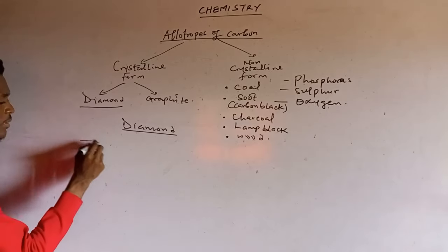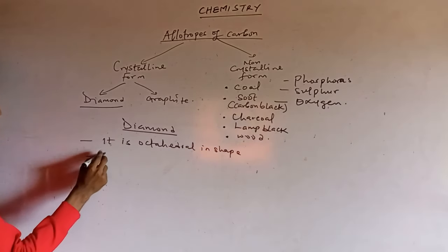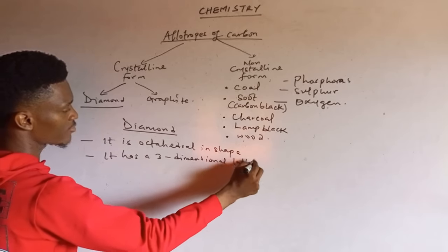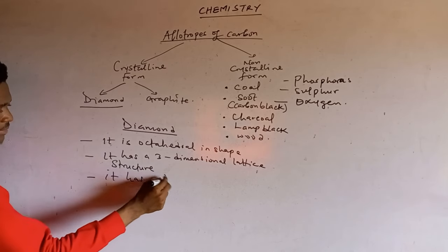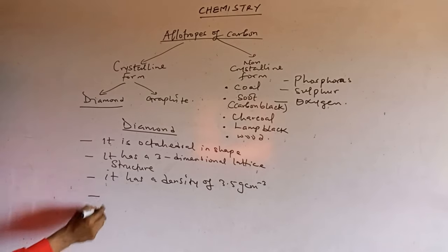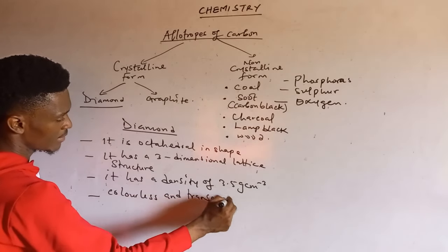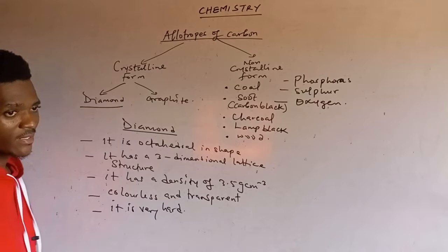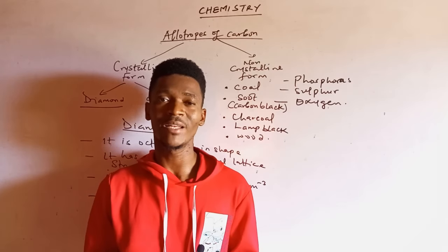Some of the features of diamond include: it is octahedral in shape; it has a three-dimensional lattice structure; it has a density of 3.5 grams per cm³ — very, very dense; it is colorless and transparent; and it is very, very hard. In fact, the hardness of diamond is unrivalled.